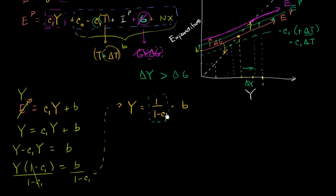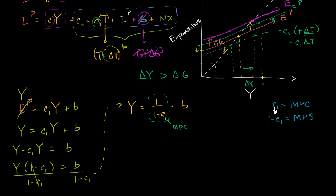This C1 is our marginal propensity to consume. For example, if C1 is 0.3, that means for every incremental dollar of disposable income you get, you spend 30 cents of it. And 1 minus C1 is your marginal propensity to save — if you're spending 30%, you're saving 70%. So the entire denominator is the marginal propensity to save, and 1 over that — 1 over (1 − C1), which is the same as 1 over the marginal propensity to save — is the multiplier.